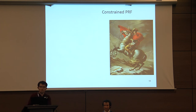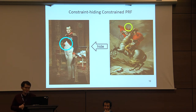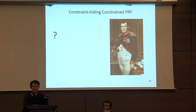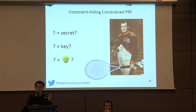Napoleon is also known for handling pressure — where to put your hand to hide something. This naturally leads to the notion of constraint hiding constrained PRF. For cryptographers, the more things you can hide, the more things you can do. Hiding more things fuels imagination in both theory and practice of cryptography.